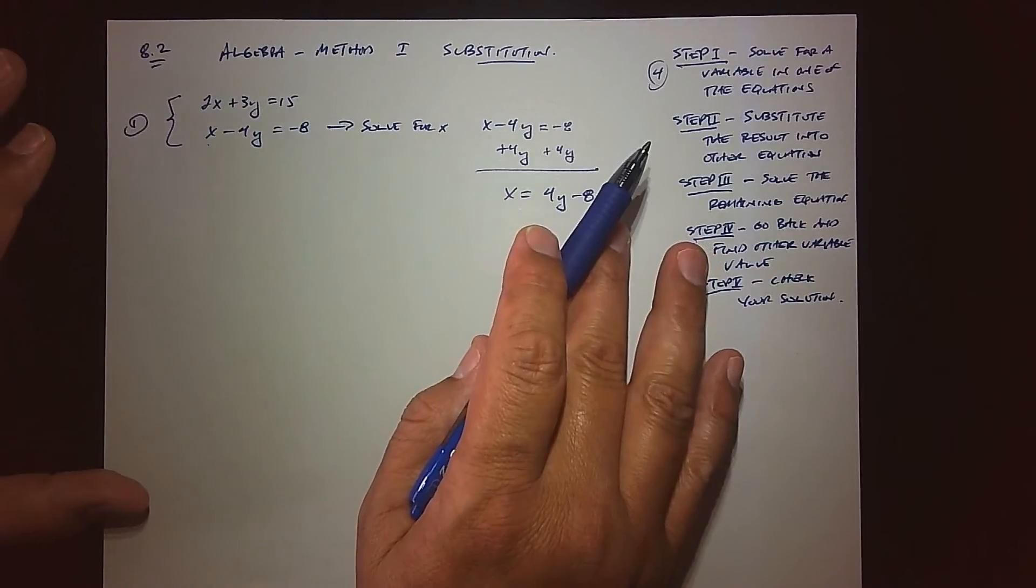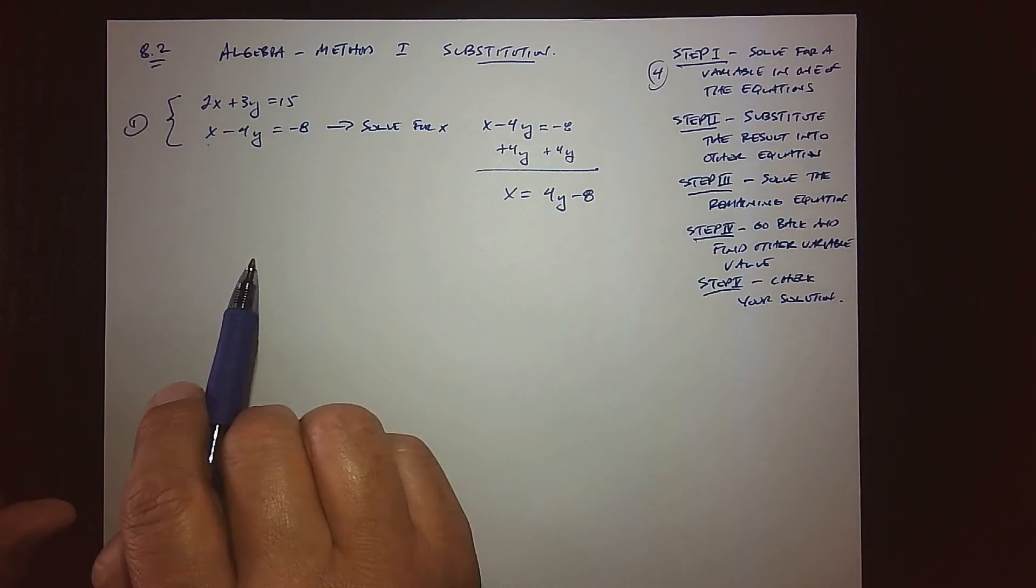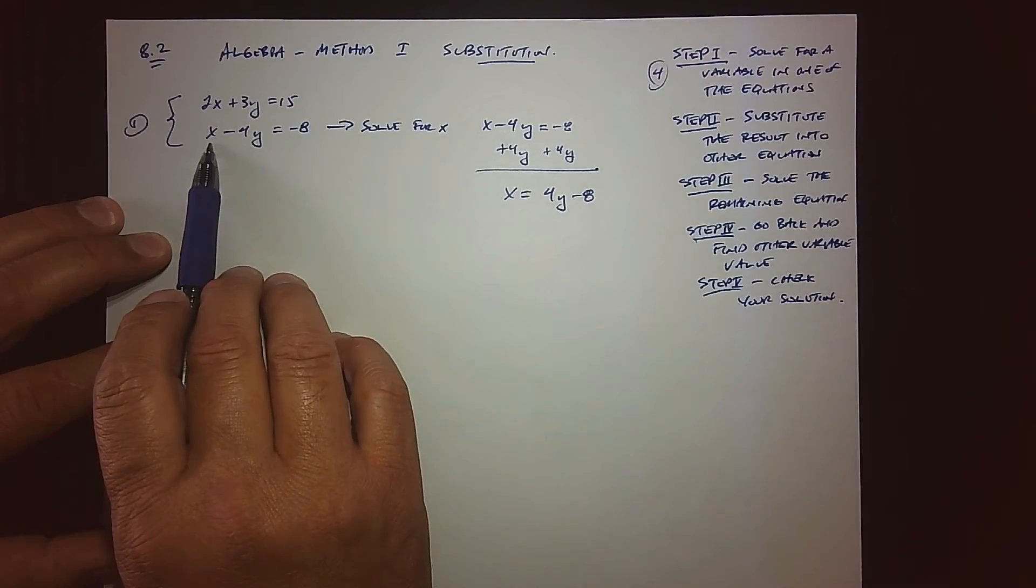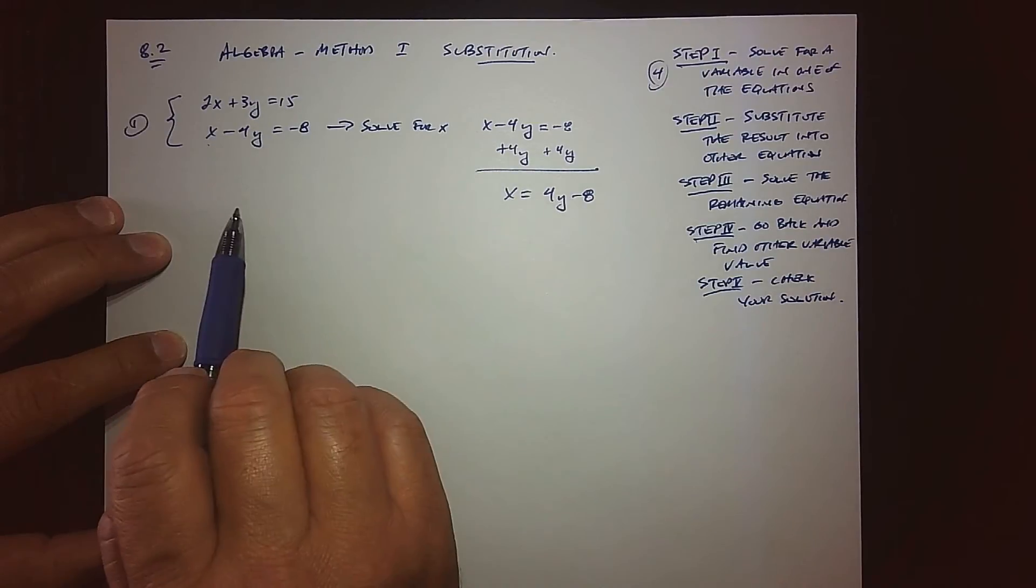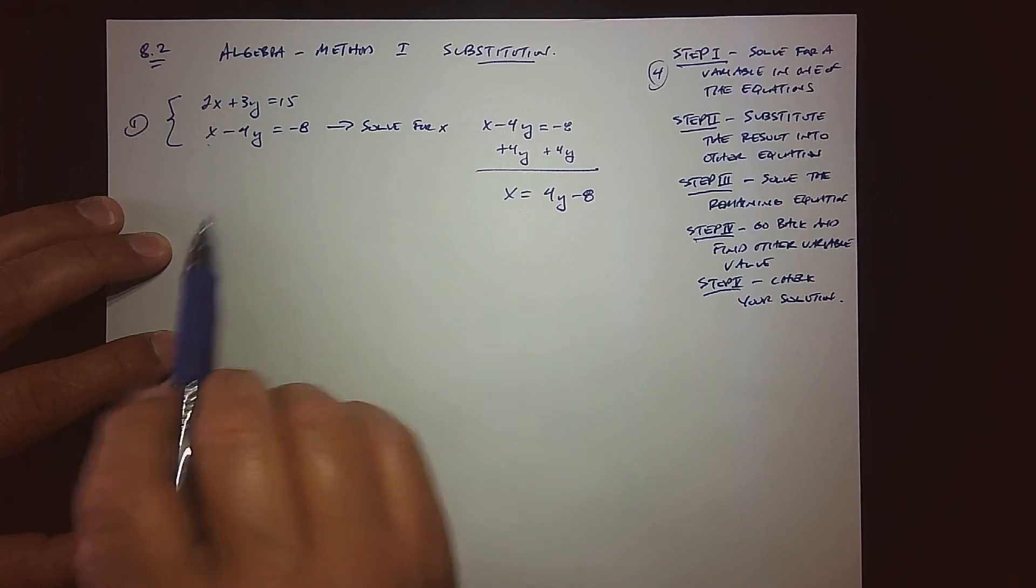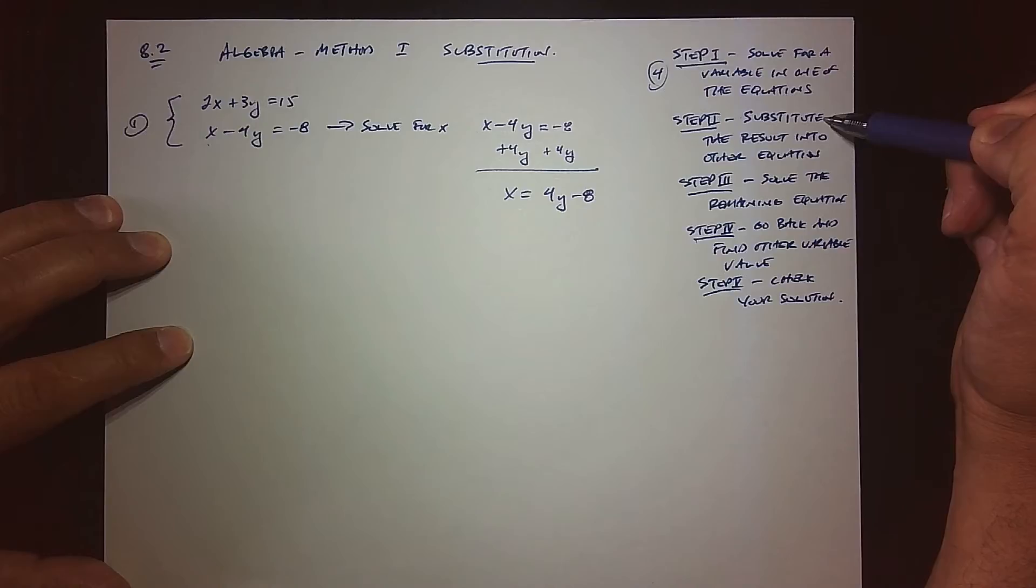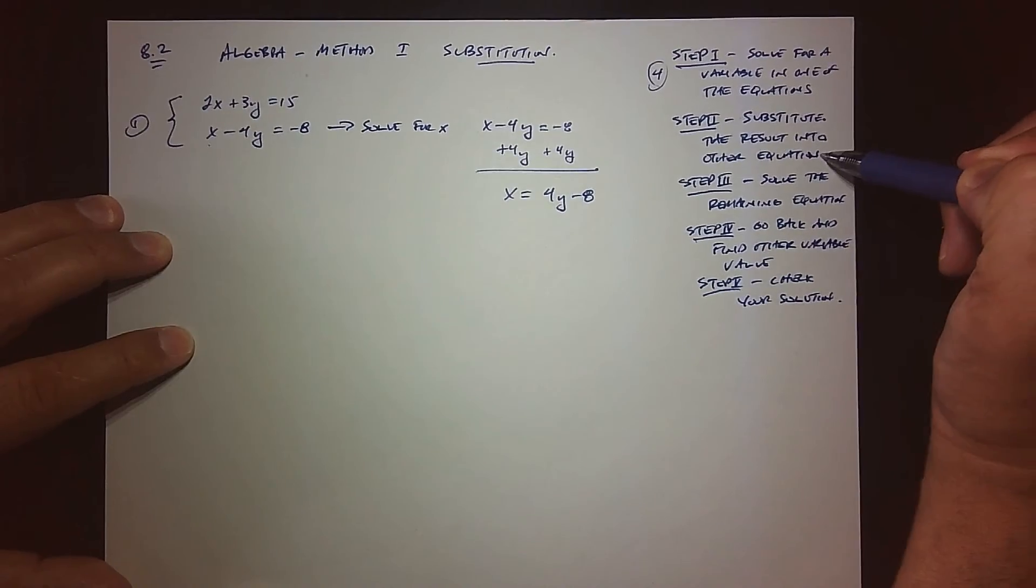We know how to handle fractions, but if I can avoid them let's do it. In this case, taking the second equation and solving for x is a pretty good choice. Now that we've done that, step 2 is to take what I have and substitute the result into the other equation.